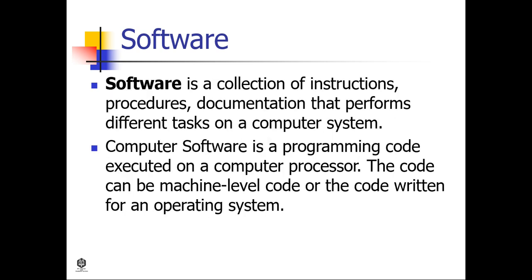Software is also a collection of instructions, procedures, and documentation that performs different tasks on a computer system. We can also say that computer software is a programming code executed on a computer processor. The code can be machine-level code or code written for an operating system. Examples of software are Microsoft Word, Excel, PowerPoint, Google Chrome, Photoshop, MySQL, and so on.